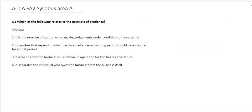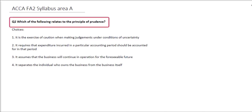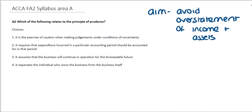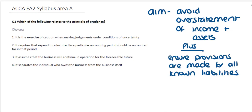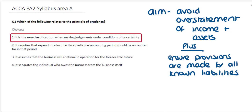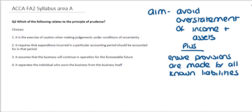Question two, which also focuses on syllabus area A, looks at principles around how and why we prepare our financial information. This question asks us which of the following relates to the principle of prudence. The main aims of prudence are to avoid overstatement of income and assets in the financial information, and to ensure that provisions have been made for all known liabilities. The first option says that it is the exercise of caution when making judgments under conditions of uncertainty — that very much feels like prudence. When we're uncertain about balances within the financial information, we will want to make sure that we're not overstating good news.